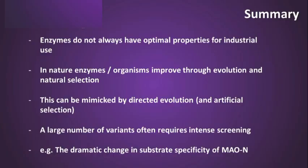In summary, this module has been about recognizing that enzymes from the natural environment do not always have optimal properties for industrial use, so we need to improve them. In nature, this improvement takes place through natural selection and evolution, and we can mimic this process of directed evolution in the laboratory by specifically screening for certain types of improved biocatalysts. This process involves generating a large number of variants and intense screening to find the optimal activity, demonstrated here by the directed evolution of monoamine oxidase N and its application as a specific optimized biocatalyst.